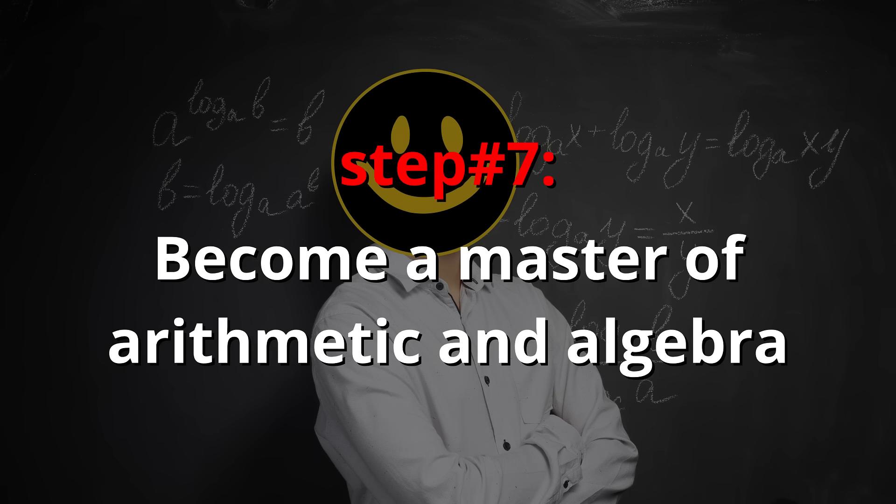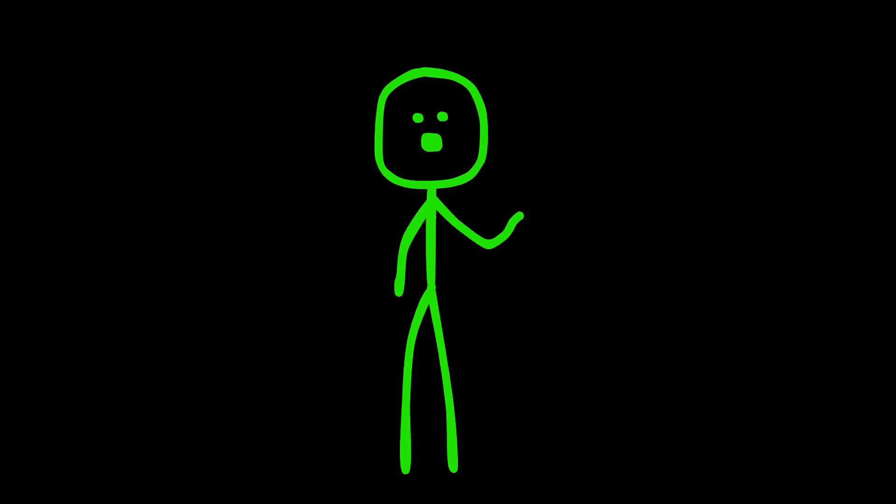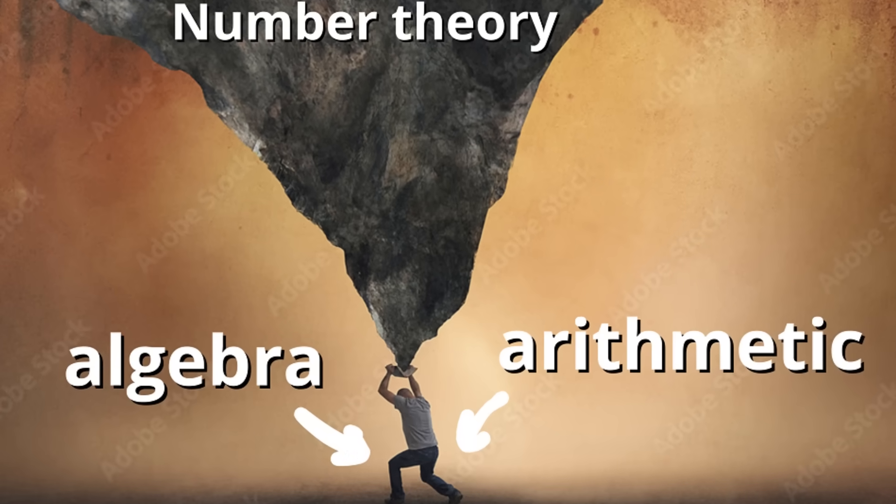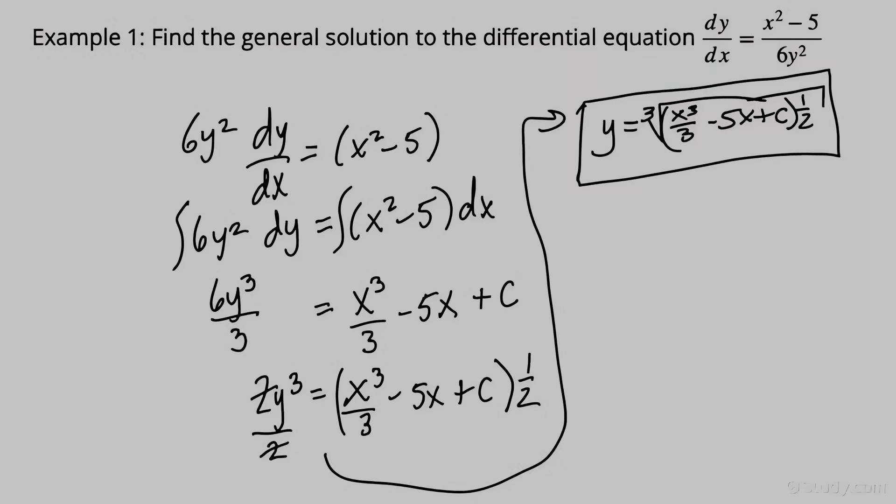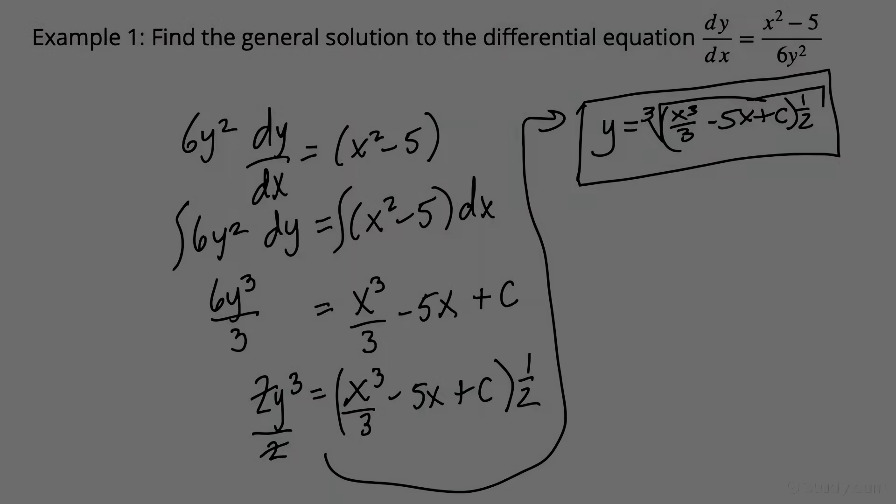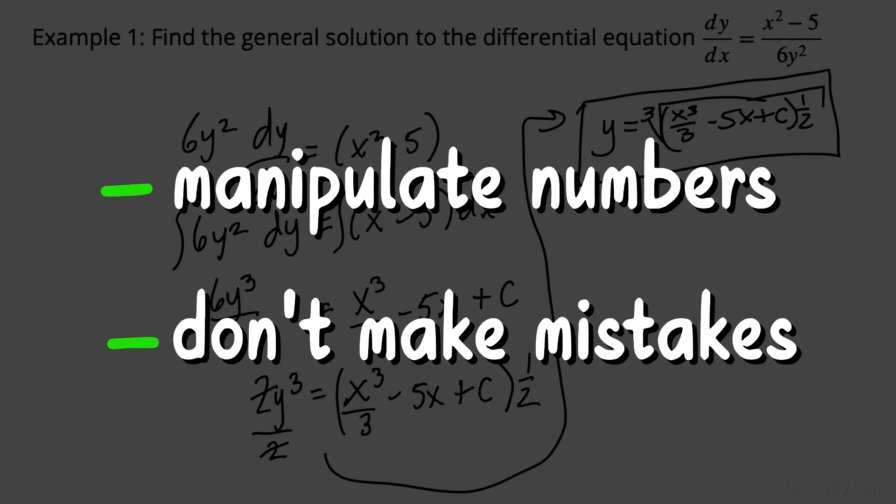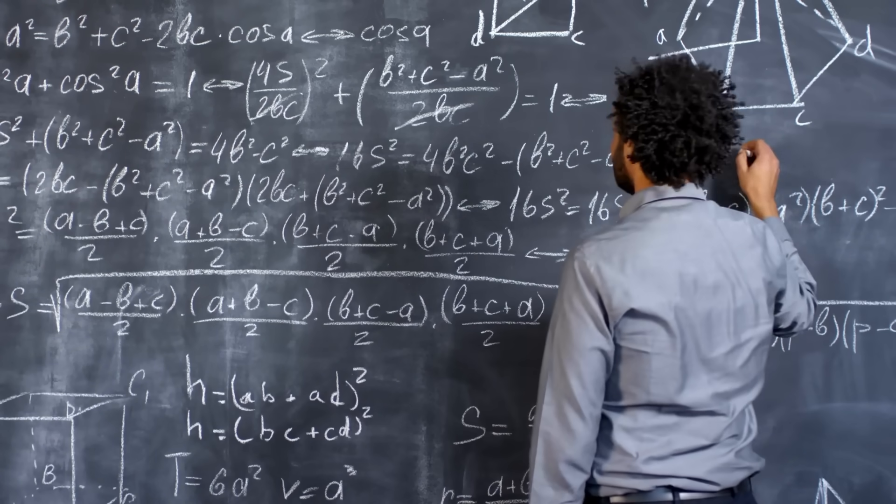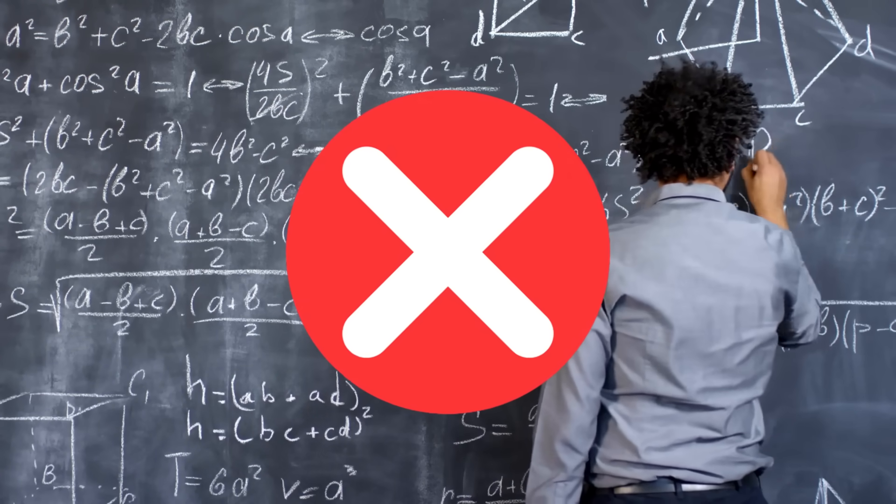Step number seven, become a master of arithmetic and algebra. It might sound strange, but all advanced math really rests on these two fundamental skills. Think about solving a differential equation. In the end, it all comes down to being able to manipulate numbers without making mistakes. And trust me, even a small algebraic slip-up can ruin an entire problem, even if you perfectly understand the underlying concept.